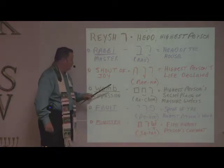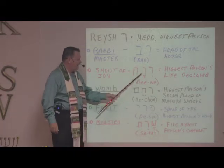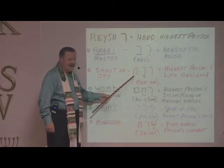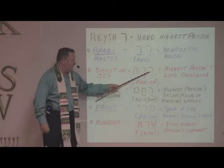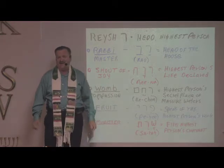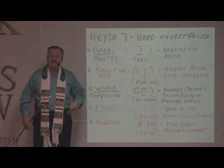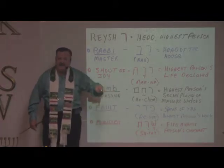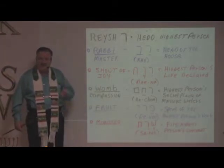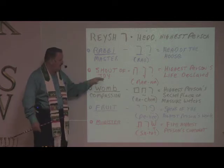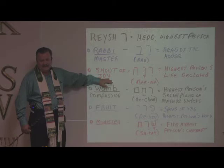The next significant word is 'shout of joy,' made up of three letters: the Resh, then Nun — which means life — and then Pay, which means to reveal or declare. Put those together: joy means 'the highest person's life is declared.' If you declare the life of Yeshua Christ, not only will it bring joy to other people, but you'll receive joy too. Even the angels in heaven rejoice when one sinner comes to Christ, and God wants us to participate in bringing others that joy of salvation.